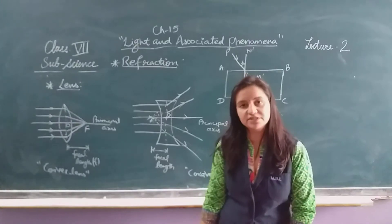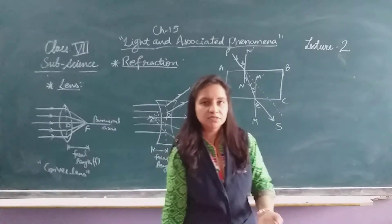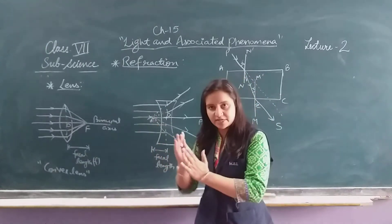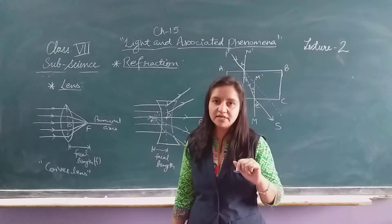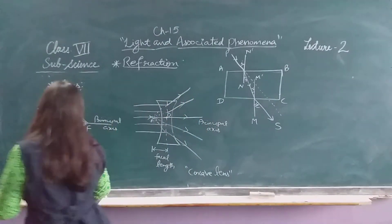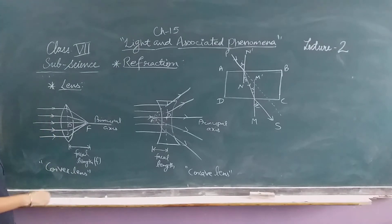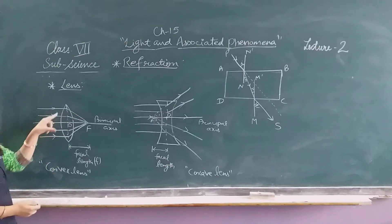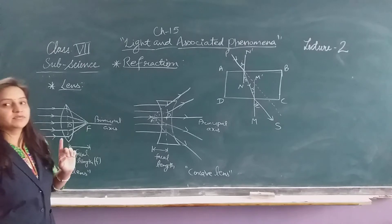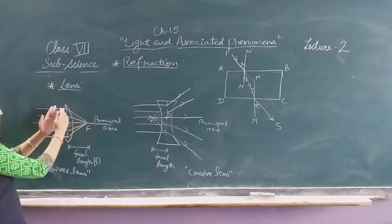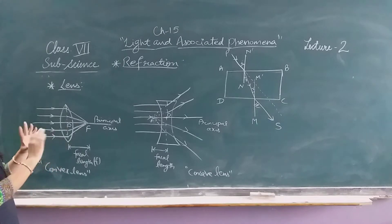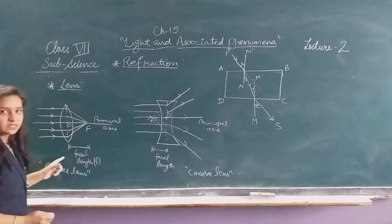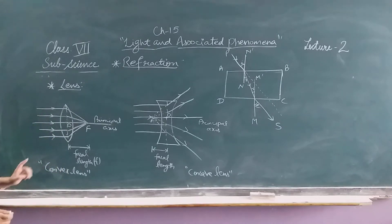Now for lenses, we ask what happens. We have learned about lenses just like mirrors — concave mirror and convex mirror. We have learned two types of mirrors, and now we learn two types of lenses. A convex lens bulges outward on one side; when both sides are raised, we call it a convex lens.